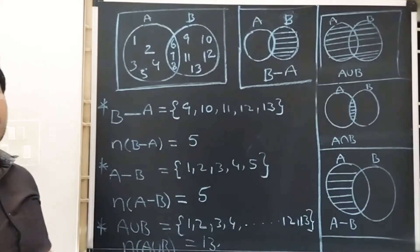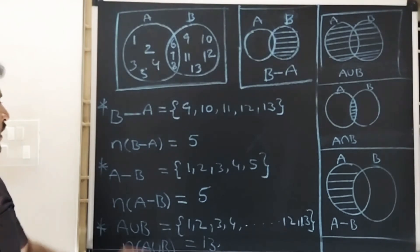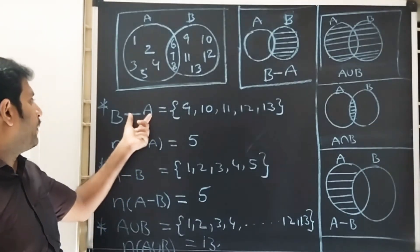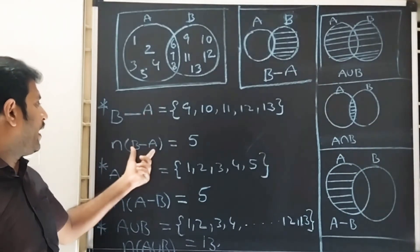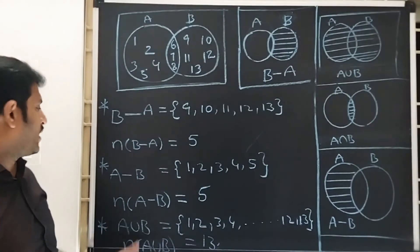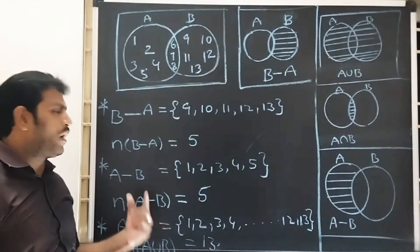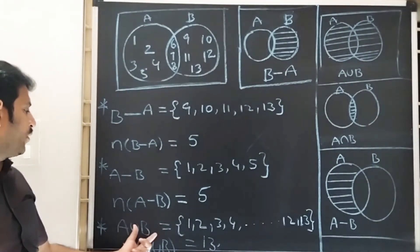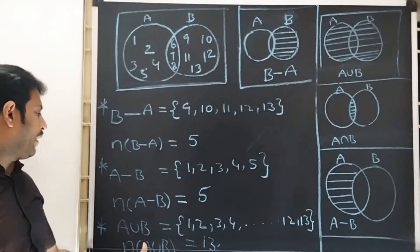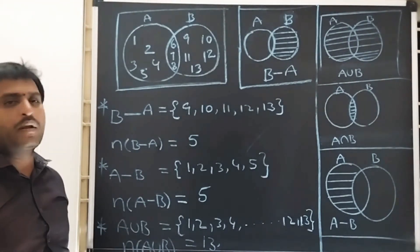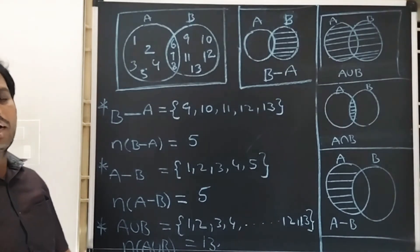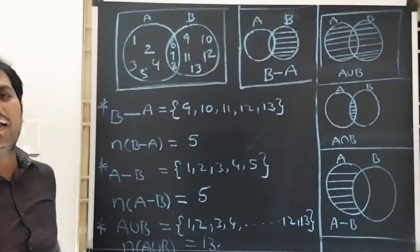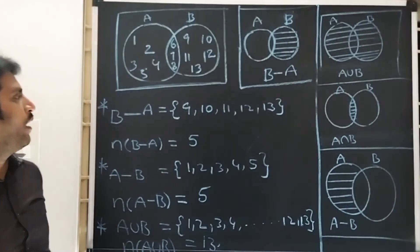Now we will create a new formula. N of B minus A, N of A minus B, N of A union B, and N of A intersection B.